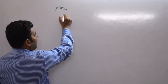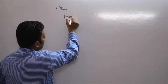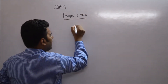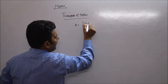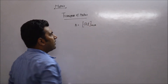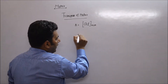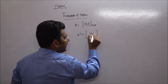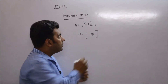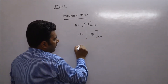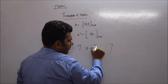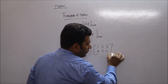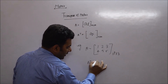First of all, I am going to define what is a transpose of a matrix. Suppose A is any matrix of order m by n. Then the transpose of this matrix is denoted by Aᵀ. This matrix will be of order n by m. For example, if A is a matrix of order 2 by 3 — say [1, 2, 3; 4, 5, 6] — this matrix is of order 2 by 3, and its transpose is a matrix of order 3 by 2.